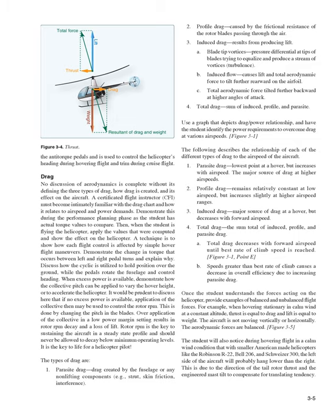Once the student understands the forces acting on the helicopter, provide examples of balanced and unbalanced flight forces. For example, when hovering stationary in calm wind at a constant altitude, thrust is equal to drag and lift is equal to weight — the aircraft is not moving vertically or horizontally and the aerodynamic forces are balanced. The student will also notice during hovering flight in a calm wind condition that with smaller American-made helicopters like the Robinson R-22, Bell 206, and Schweitzer 300, the left side of the aircraft will probably hang lower than the right, due to the direction of tail rotor thrust and engineered mass tilt to compensate for translating tendency.